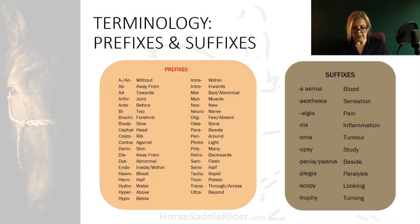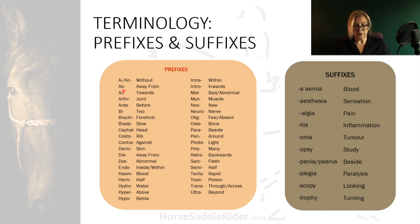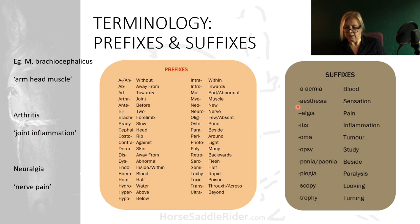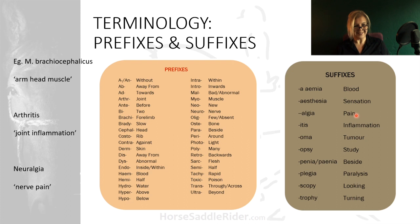Here we have prefixes and suffixes. Prefixes are at the beginning of a word, suffixes are after. For example, the muscle brachiocephalicus is the arm-head muscle. Arthritis would be joint inflammation. Neuralgia is nerve pain. So even though it seems like jargon, it is actually quite simple.